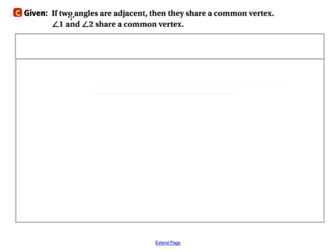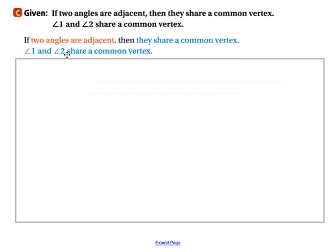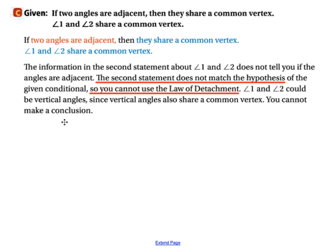Here's a third example. If two angles are adjacent, then they share a common vertex. Our hypothesis is two angles that are adjacent; our conclusion is that they share a common vertex. Our second given is angle 1 and angle 2 share a common vertex. That matches the conclusion, not the hypothesis. So therefore, we cannot draw a valid conclusion using the law of detachment.